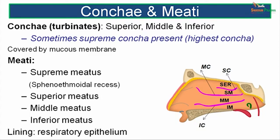The concae, also known as turbinates, are three in number: superior, middle, and inferior. Sometimes a supreme or highest conca may also be present. The concae are covered by mucous membrane. The spaces related to the concae are the meatuses: the supreme meatus or sphenoethmoidal recess is above the superior nasal conca; the superior meatus is below the superior nasal conca; the middle meatus is below the middle nasal conca; and the inferior meatus is below the inferior nasal conca. These meatuses are lined by respiratory epithelium.